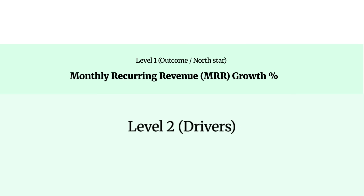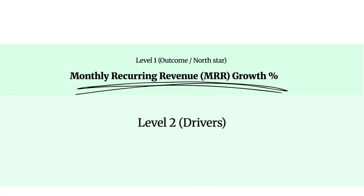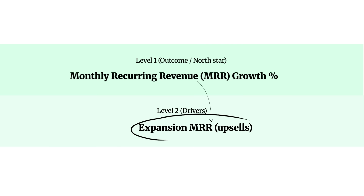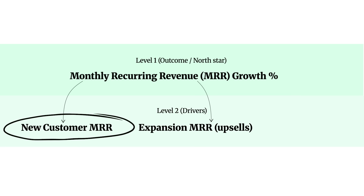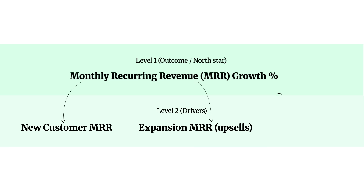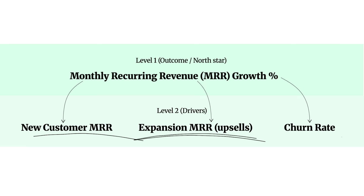Number two is the drivers of that metric. To improve MRR, there are three key drivers: first, expansion revenue — did existing customers move from a lower to a higher subscription tier, meaning the same customer pays you more each month. Second, new customer acquisition — are you acquiring enough new customers. And third, churn rate — how frequently are customers leaving your product or service. These three are the levers you can pull to affect your North Star metric.